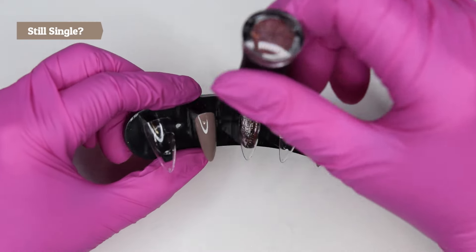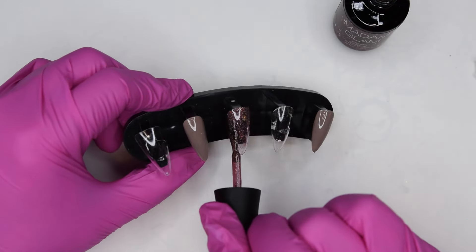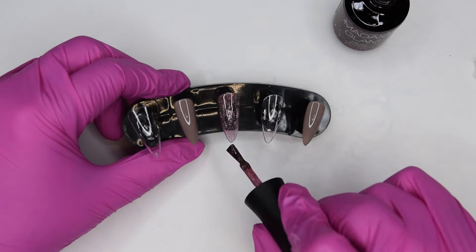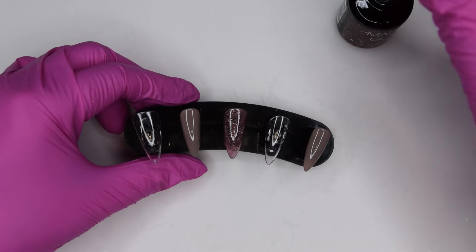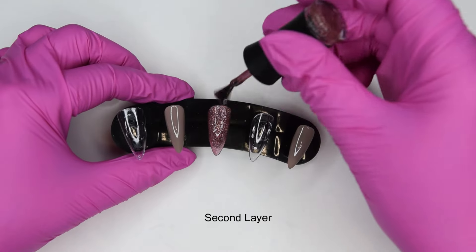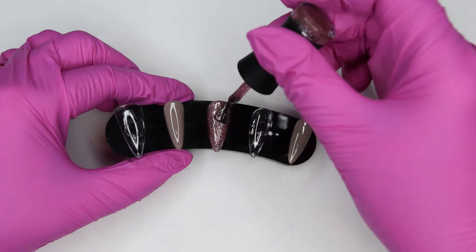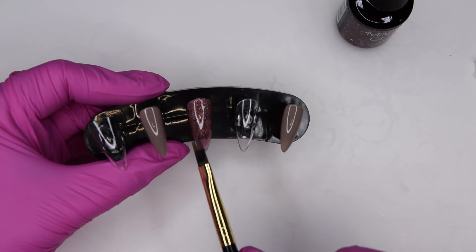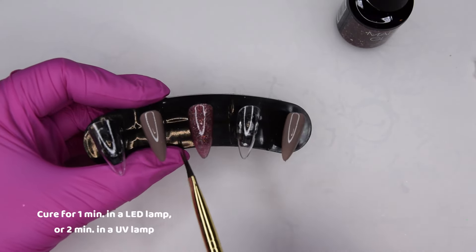And then I go in with the color Still Single. It is a wine red color. And it is very sheer. Like a jelly color. Or yogurt color. Honey color. I'm just not fully familiar with these terms of these see through colors. So the second and third layer here I only apply to half of the nail. And fade it down towards the tip with the ombre brush.